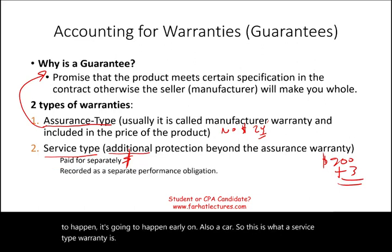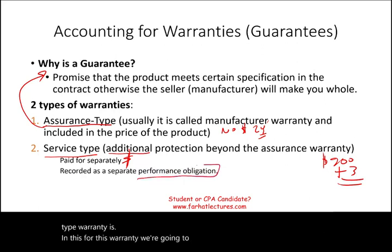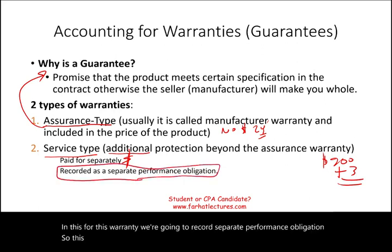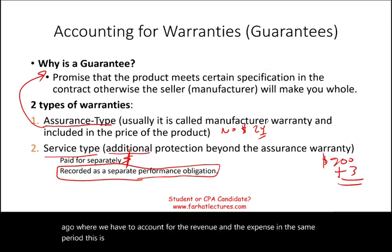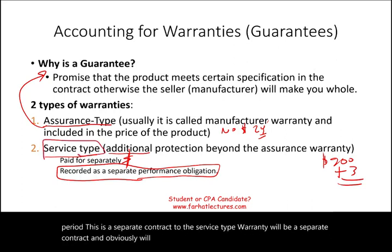For the service type warranty, we record a separate performance obligation. This warranty is separate from the assurance warranty we discussed earlier, where we match revenue and expense in the same period. The service type warranty is treated as a separate contract, and we'll work through an example explaining it.